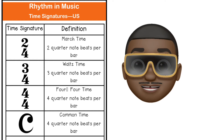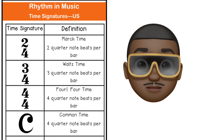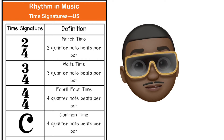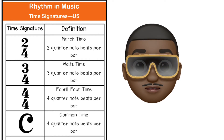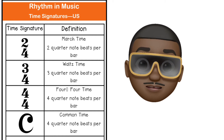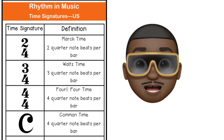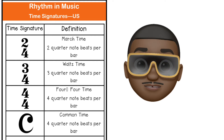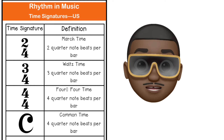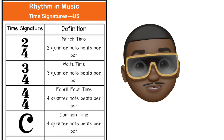Here we have a list of simple time signatures that we use in beginning music. Remember that the top number tells you how many beats are in a measure, and the bottom number tells you what type of note receives one count. At the bottom you have common time, which is the same thing as a four-four time signature. Please pause the video and make yourself familiar with these simple time signatures.